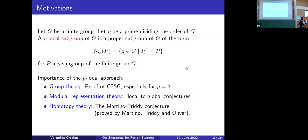But we can also look at modular representation theory. In there, there are many so-called local-to-global conjectures that do exactly this: they say if you have a property at the p-local level, then you have this property for the full group G. We can also go to homotopy theory. An example here is the Martino-Priddy conjecture, now a theorem proved by Martino-Priddy and Oliver, that says that two finite groups have the same p-local structure if and only if, roughly speaking, their classifying spaces do so.